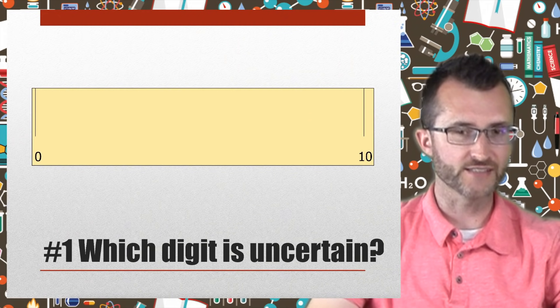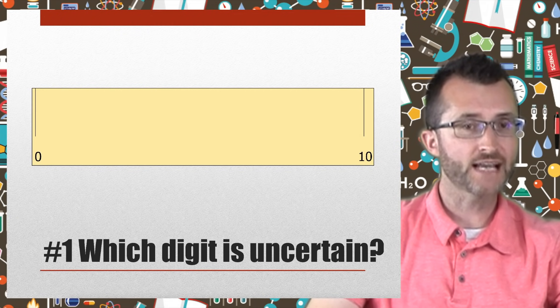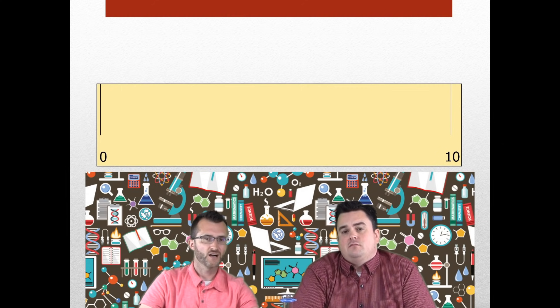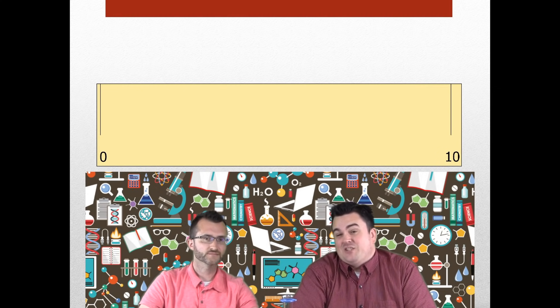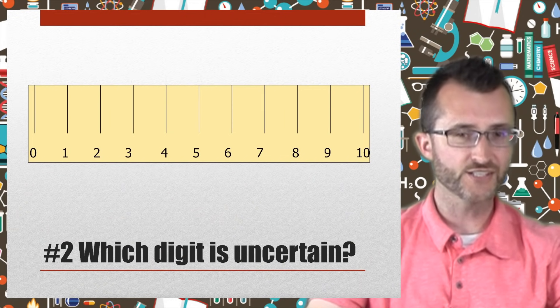We're going to play a little game: which digit is uncertain? Let's look at ruler number one. Write down on your PowerPoint slide which digit is uncertain. Fu, which digits are certain on ruler number one? This is the world's worst ruler. I'm going to say the tens spot is the certain digit. So which digit is uncertain that we would estimate? I'll go with the ones, since it's one place smaller and would be the estimated one in between. Very good — so if you put an object on that ruler, we'd have to estimate where it was by the ones place.